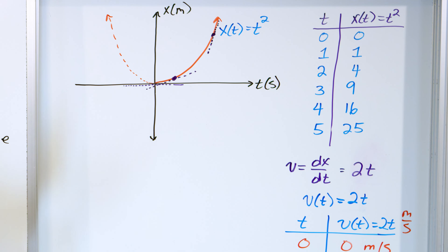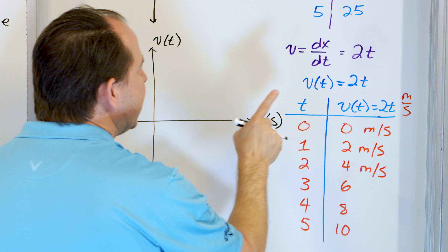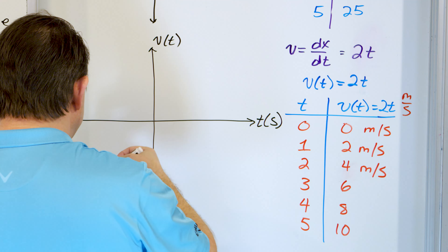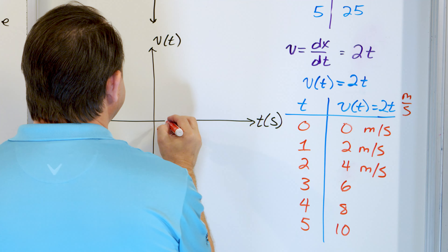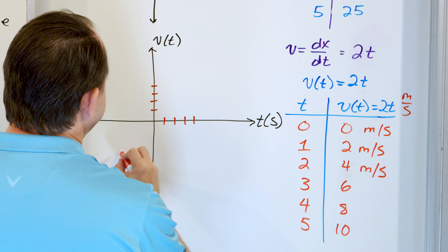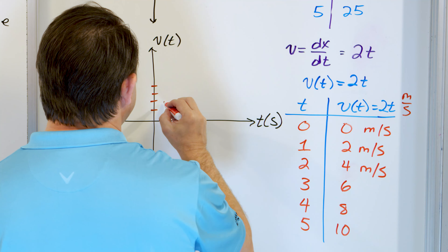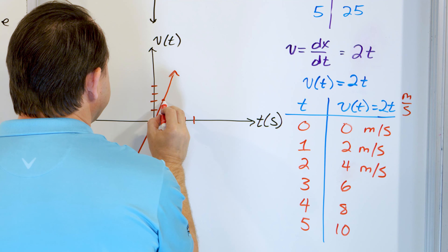I'm going to draw one more graph, then this lesson is over. In the top we drew the position of this particle as a function of time. Now let's plot its velocity as a function of time. The velocity is 2t — a line with slope 2, starting at zero, going something like this — steeper than slope 1. At 1 second the velocity is here, 2 seconds it's here, 3 seconds higher, 4 seconds higher still. At every moment, I'm increasing my speed at the same rate.